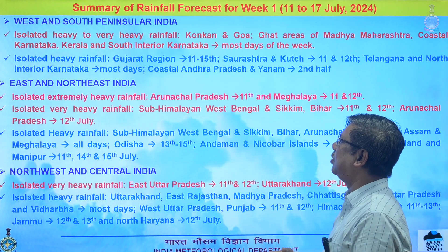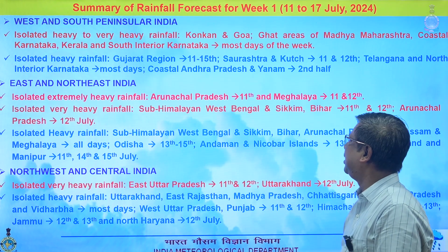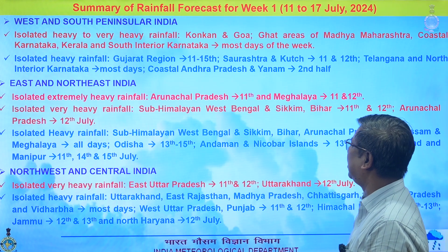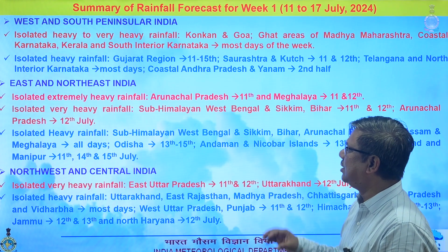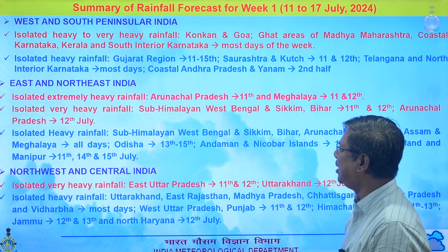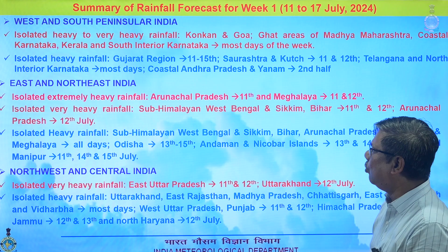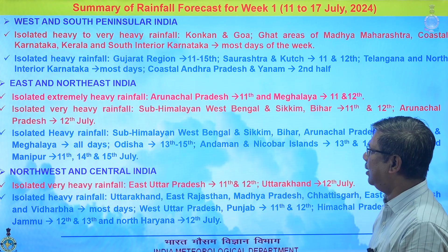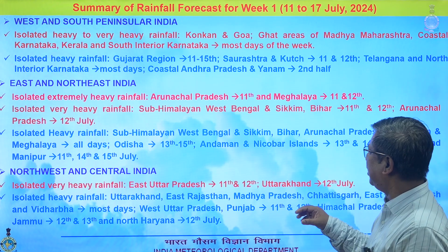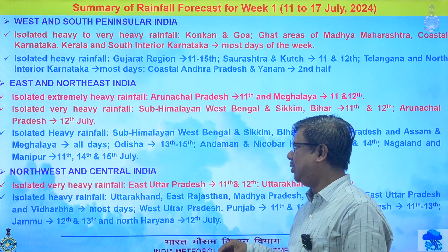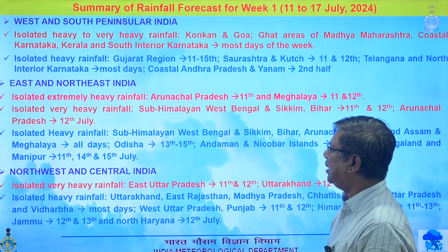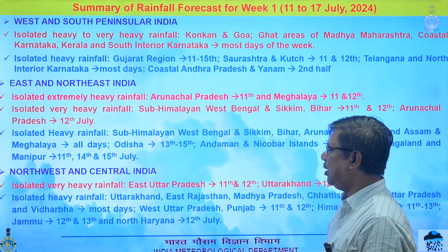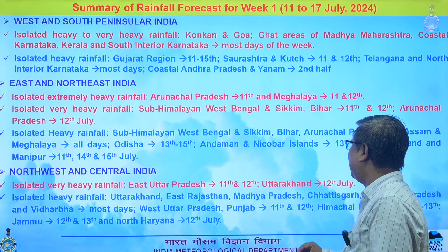Gujarat region will have isolated heavy rainfall from 11th to 15th. Saurashtra-Kutch will have warnings on two days only. North interior Karnataka will have warnings on most days, and coastal Karnataka and representations only in the second half of the week. For east and northeast India, isolated extremely heavy rainfall is possible over Arunachal Pradesh with red warning for 11th; Meghalaya warnings on 11th and 12th; Sub-Himalayan West Bengal, Sikkim on 11th-12th; Arunachal Pradesh on subsequent days; Sub-Himalayan West Bengal, Sikkim, Bihar, Arunachal Pradesh, Assam, and Meghalaya all days; Odisha from 13th to 15th; Andaman and Nicobar Islands on 13th and 14th; and Nagaland and Manipur on 11th, 14th, and 15th July.